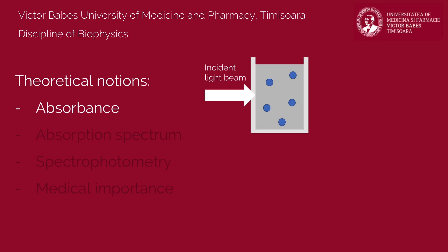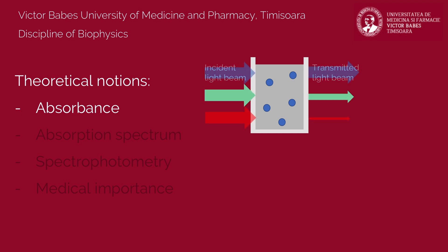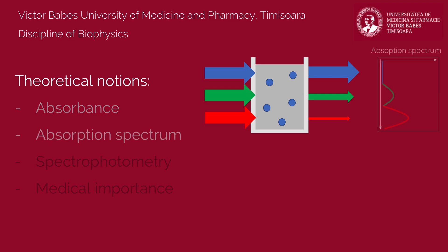When passing through transparent substances, the light intensity decreases as it is absorbed by that substance. The physical quantity that quantifies the light absorption is called absorbance. In the case of polychromatic light, different colors are being absorbed differently, depending on the composition of that substance. Thus, each transparent solution has a specific absorption spectrum, described as the variation of absorption with light's wavelength.